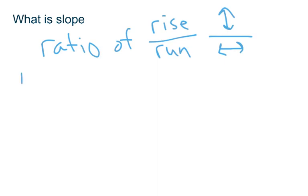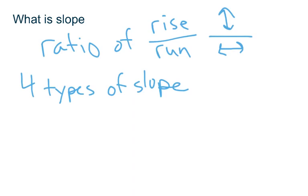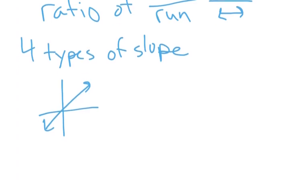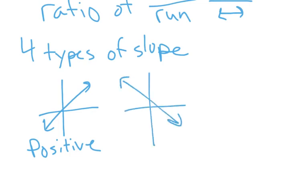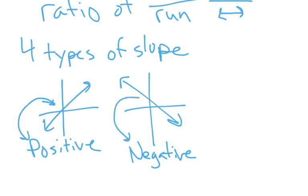We have to understand that there are four types of slope. We'll work on connecting the numbers with the pictures. Starting with the pictures: one type of slope is a positive slope, where it increases from left to right. The exact opposite is a negative slope, where it's decreasing from left to right. We need to make these associations between the picture and the word.